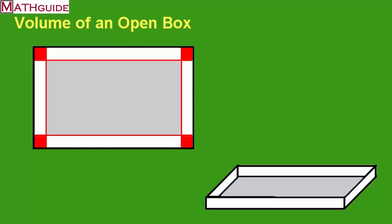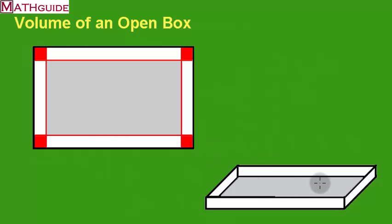Here's what it would look like once the sides are folded upward. You remove those corners, fold along the red lines, and you'd have this shape — an open box with the gray area being the bottom of the box.